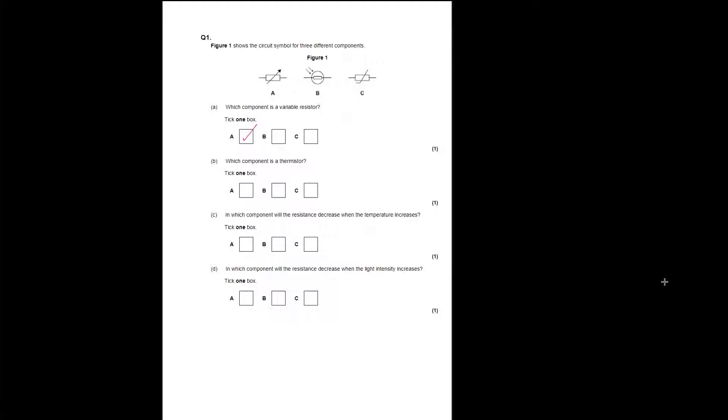If there wasn't an arrow — if it was just a plain rectangle — then that would just be a fixed resistor.